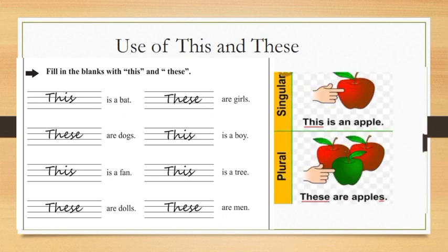Now you will see that one is singular and one is plural. You have here first, this is an apple. When you have one apple, you use this because it is one thing. Now below, in plural, these are apples. When apples are more, then we use these. Okay, you have to solve filling the blanks first, filling the blanks with this and these.